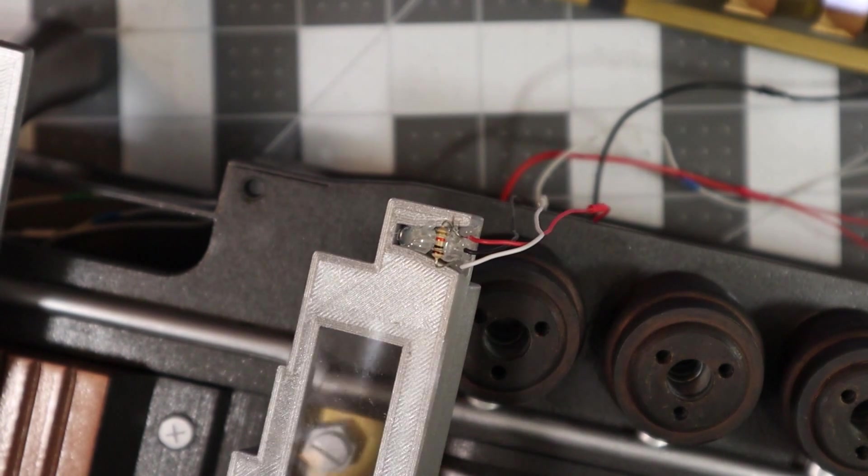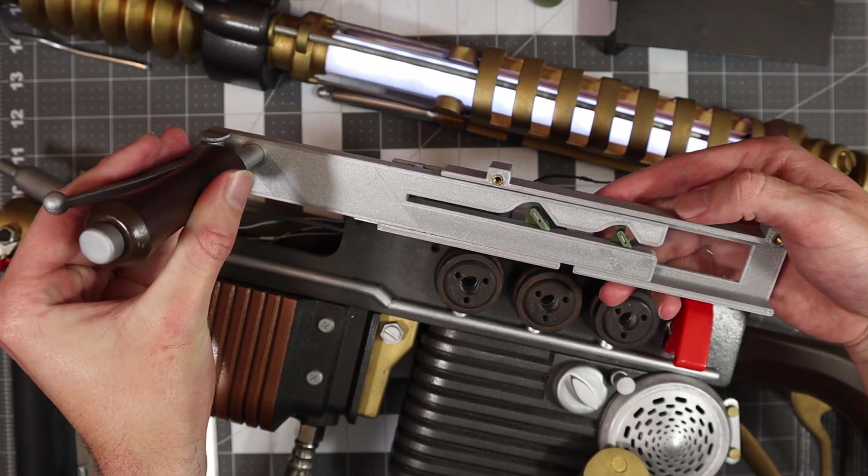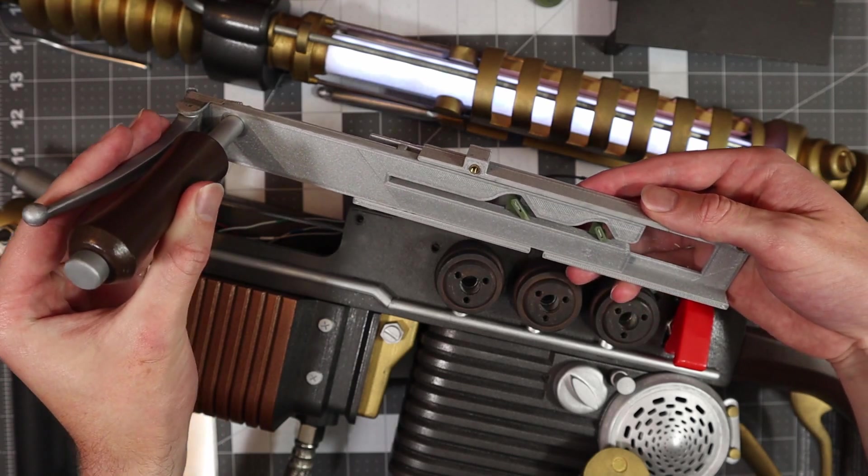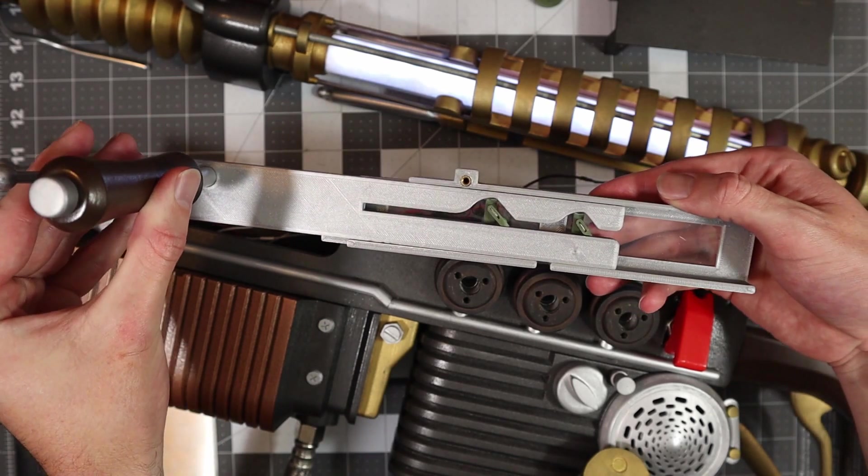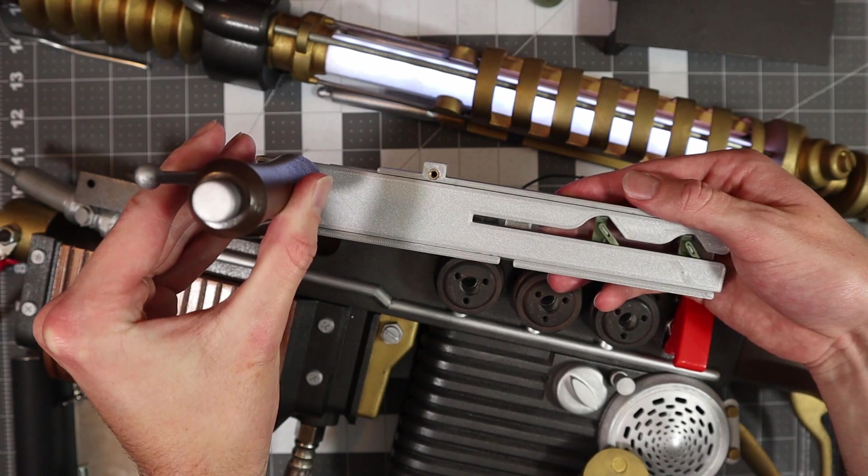When the lever is pulled and tubes ejected, the sensor detects the magnet and sends its data pin to ground. This tells the microcontroller, via the software, to play the ejection sound. When the lever is pulled back like this, the software also prevents the trigger from playing the shooting sound effects.